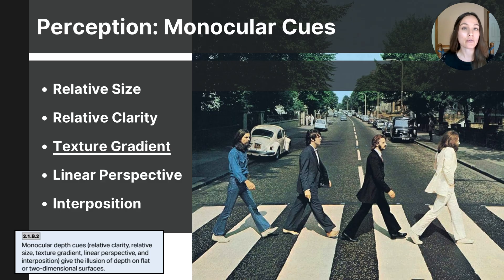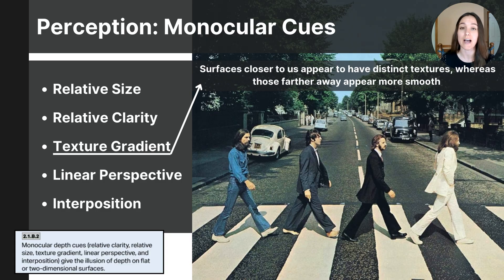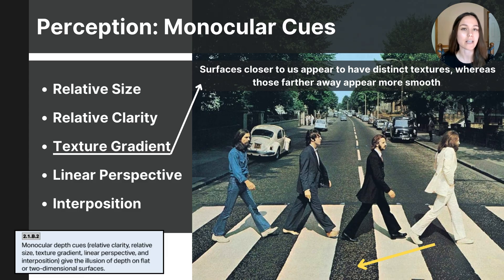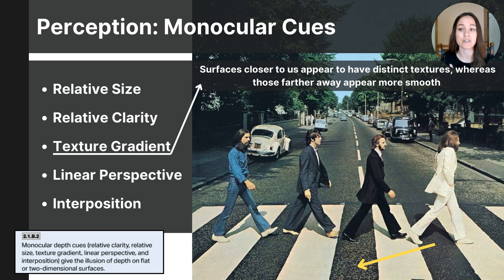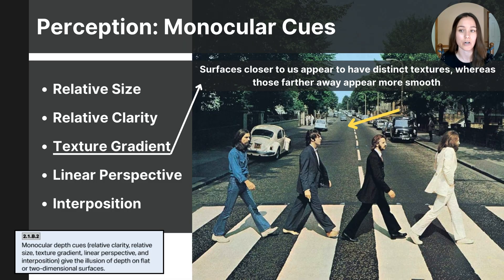Texture gradient is a cue that shows a gradual change in surface texture as you recede into the distance. At the bottom of the photograph, notice the pavement — it appears coarse and detailed, with visible particles and dark and light textures. As you look farther down the road, the texture becomes smoother and less distinct. This helps us perceive depth and is called texture gradient.